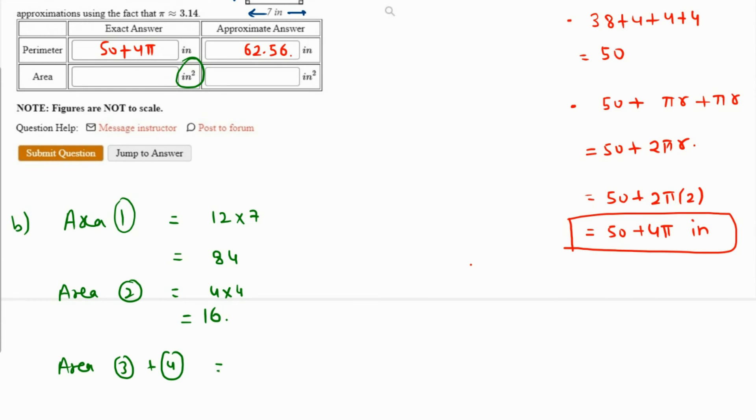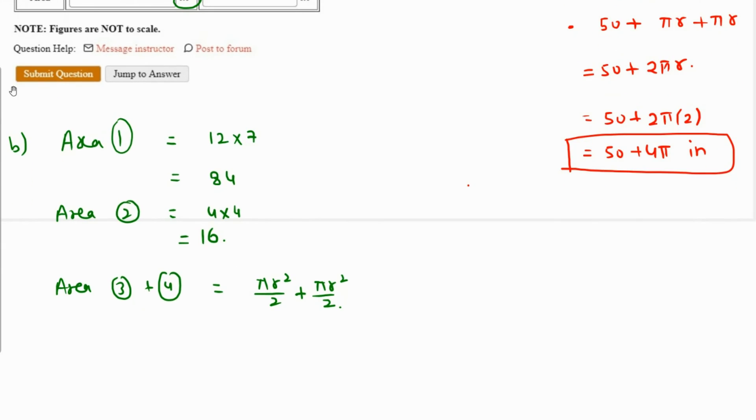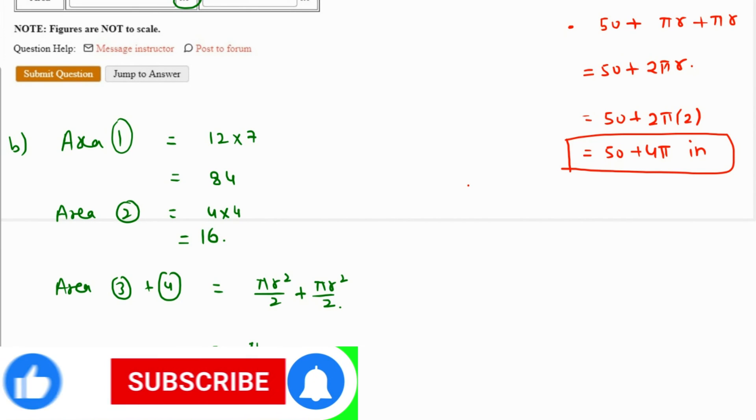And 3 and 4 are basically the same figure, so area of 3 plus 4 is going to be πr²/2 plus πr²/2, because these are semicircles and area of complete circle is πr², so half will be πr²/2. So that's going to be πr² where r, like I said, is 2. So 2 squared is 4, so we write 4π.